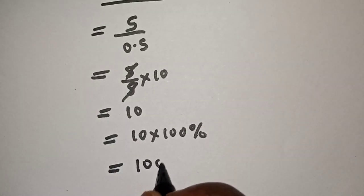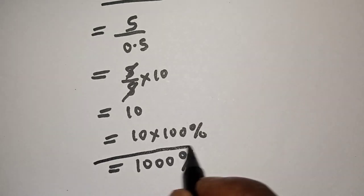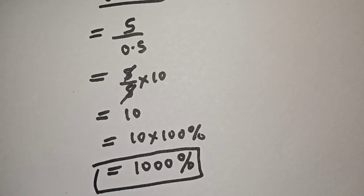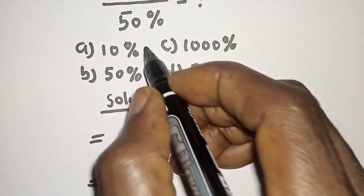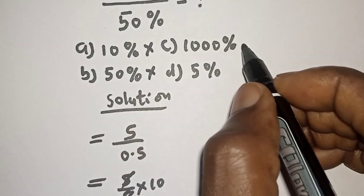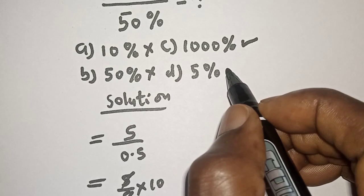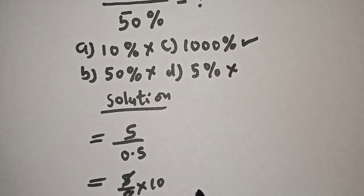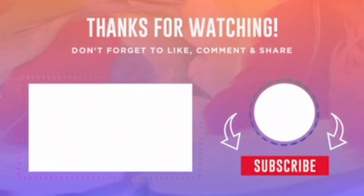Let's check for the correct option. A is 10%, no. B is 50%, no. C is 1,000%, yes. And D is 5%, no. If you enjoyed the class, please don't forget to like, share, comment, and subscribe. Thank you.